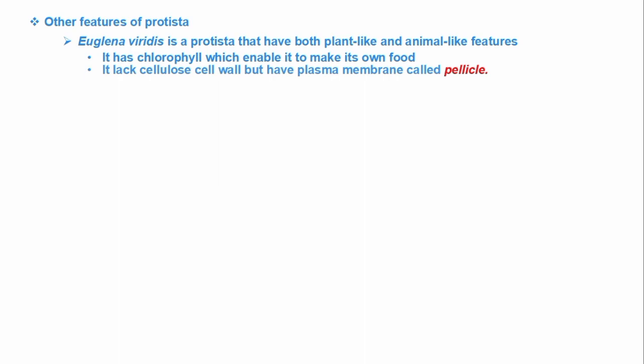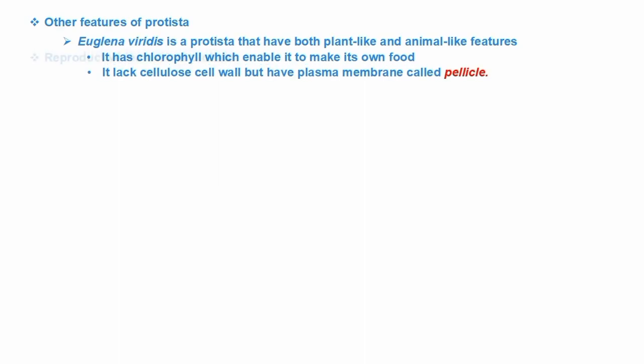You have to remember that Euglena is a Protista which has a chloroplast enabling it to make its own food, but it does not have a cell wall. Instead it has a cell plasma membrane called a pellicle.